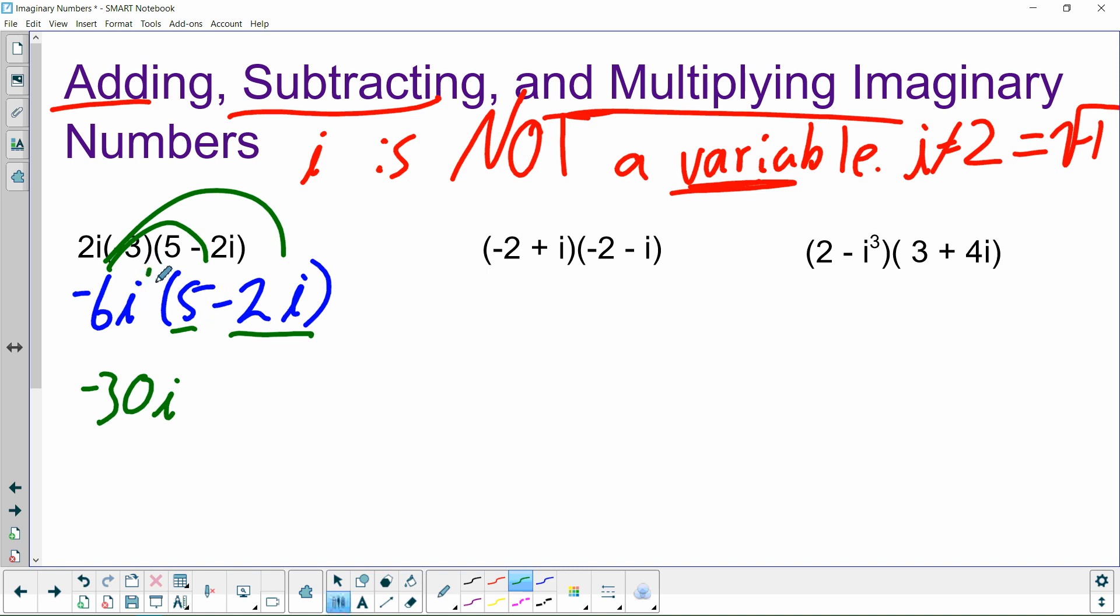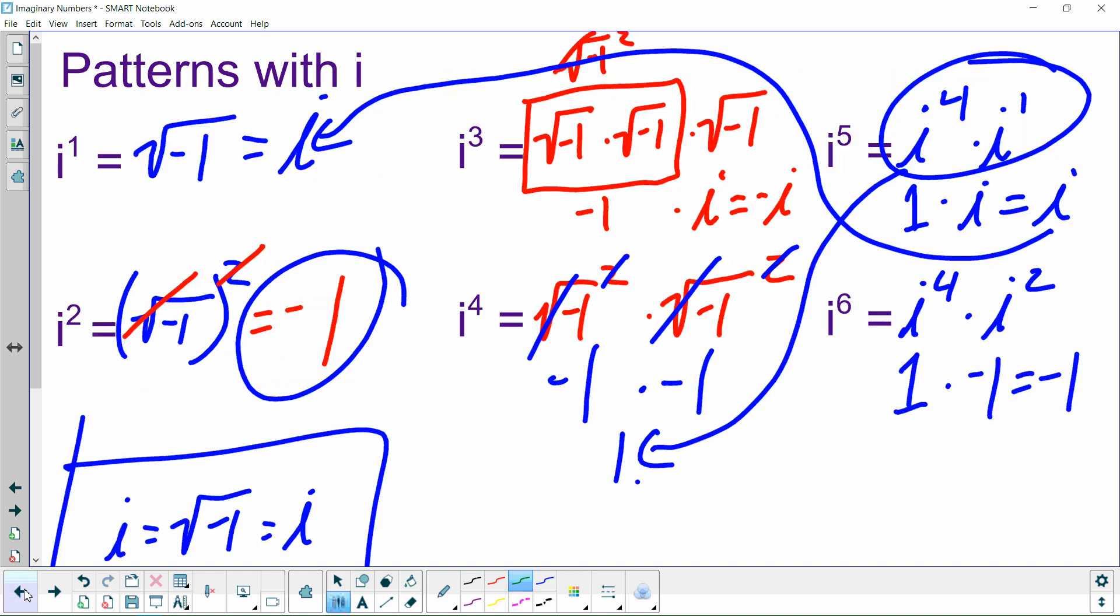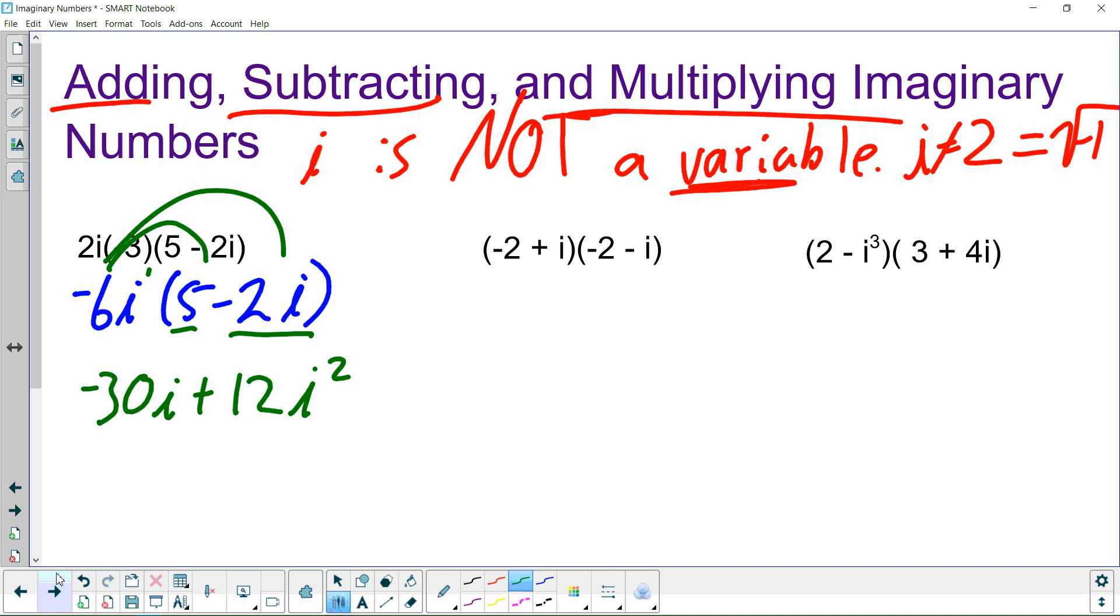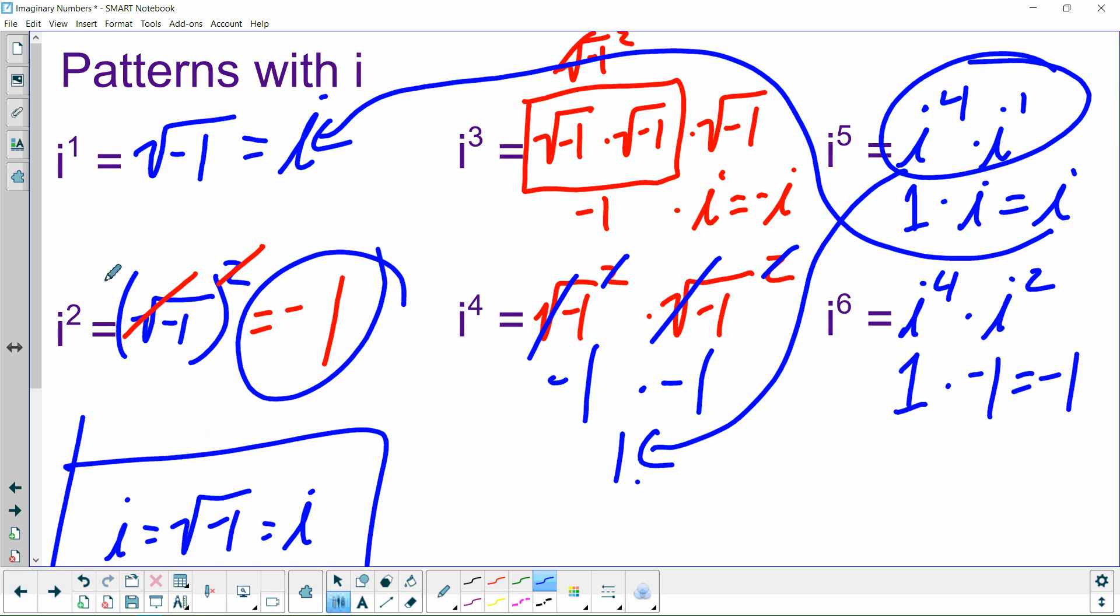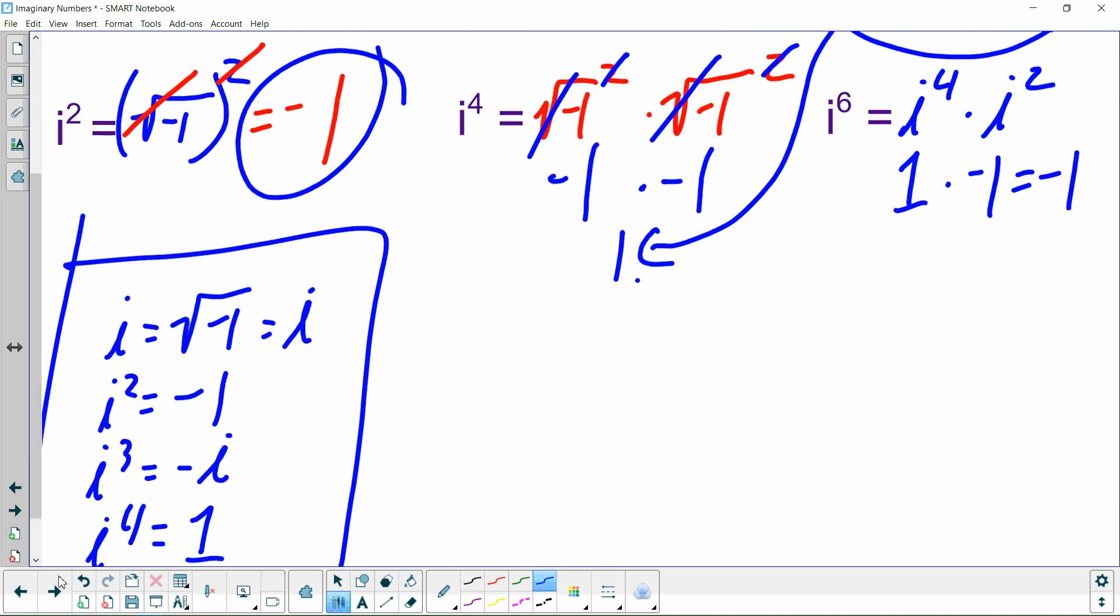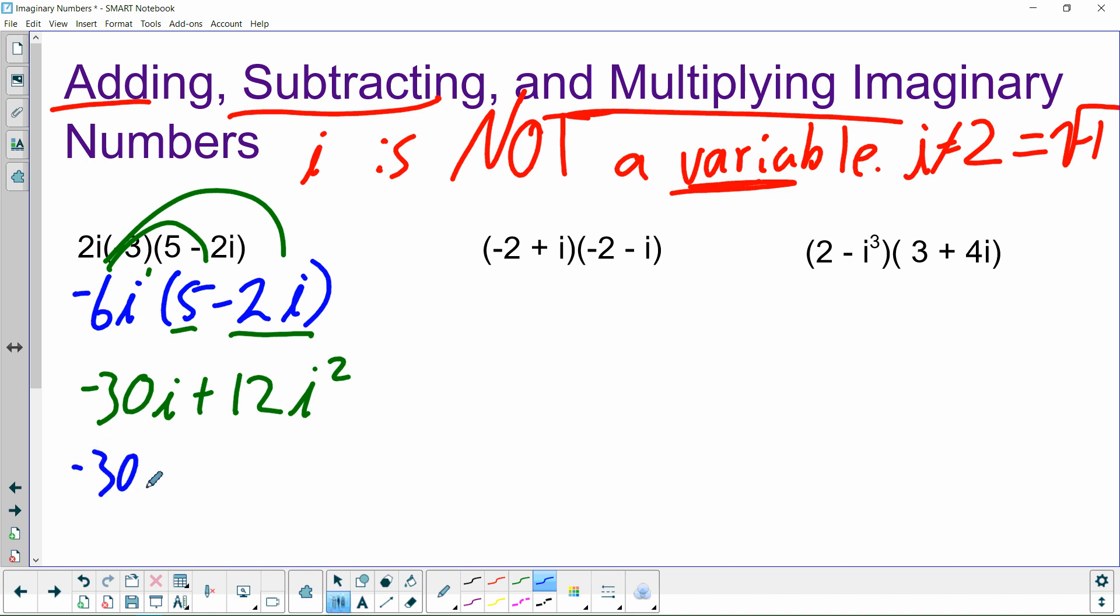So we multiply the numbers. 5 times negative 6 is negative 30. And then we bring down the i, because there's not another i here to multiply to, so our exponent doesn't change. Negative 2 times negative 6 is positive 12. And then i times i is i squared. If you leave it like this, it's going to get marked wrong on all of my tests, because you need to simplify this. I didn't spend 5 minutes explaining this pattern to you for you to not use it.